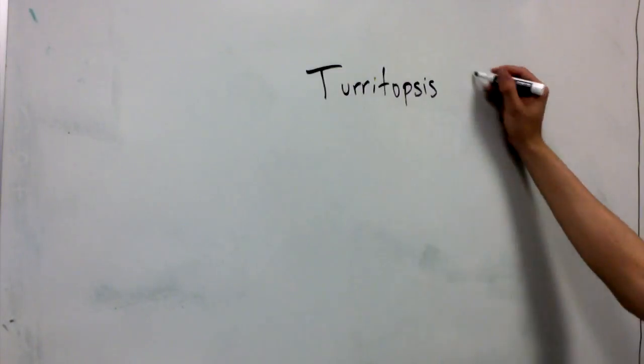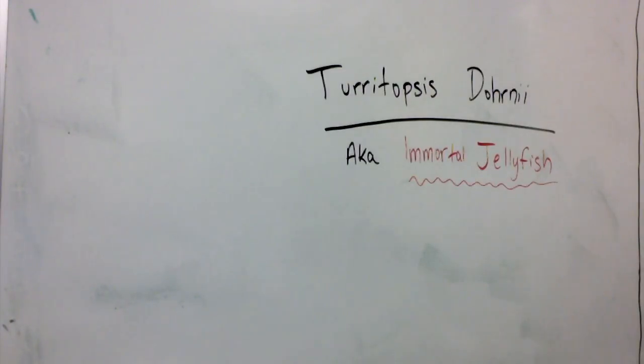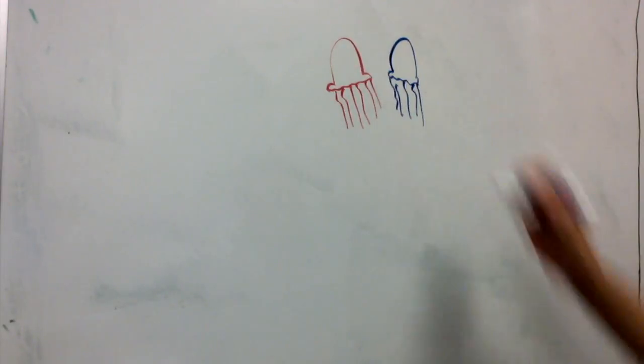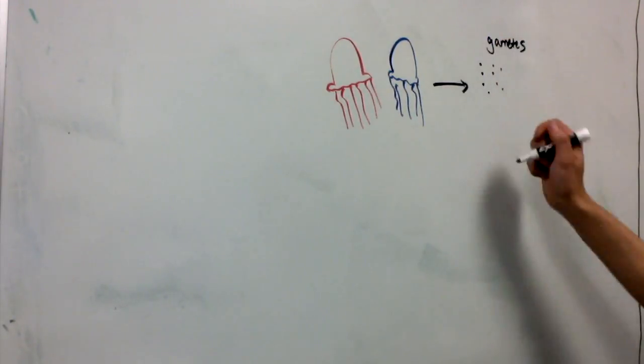The immortal jellyfish, on the other hand, is called the Turritopsis dohrnii, and undergoes a different cycle. Basically, they make gametes, larvae, then polyps, just like the other cycle.